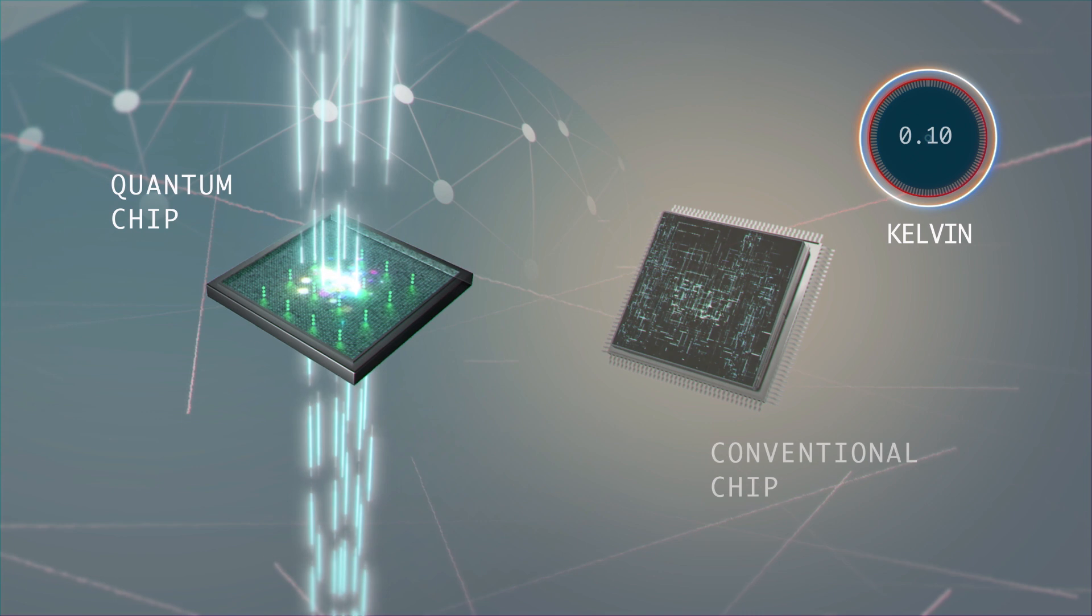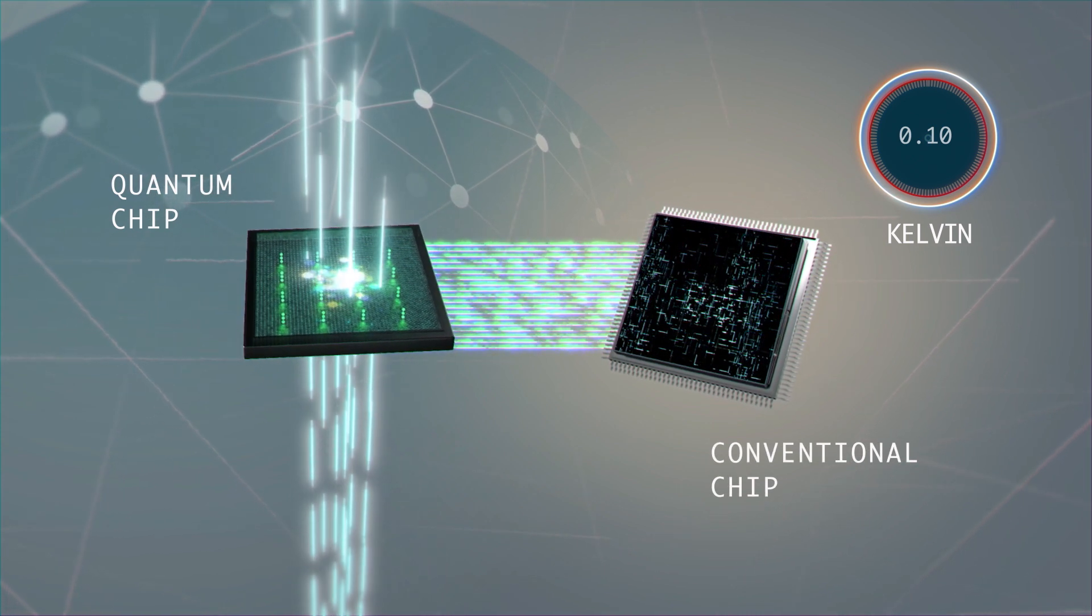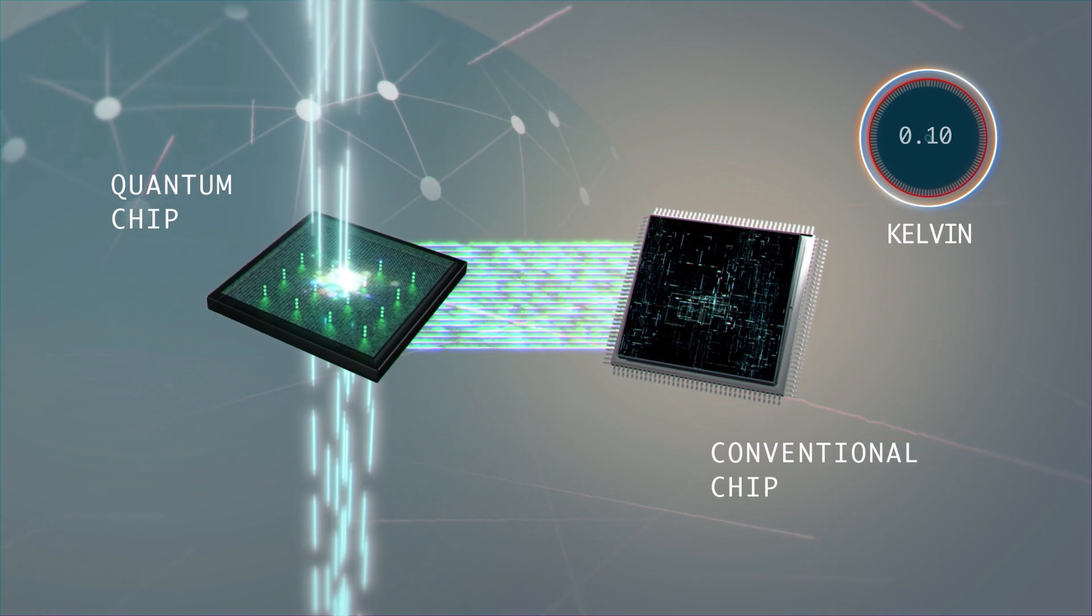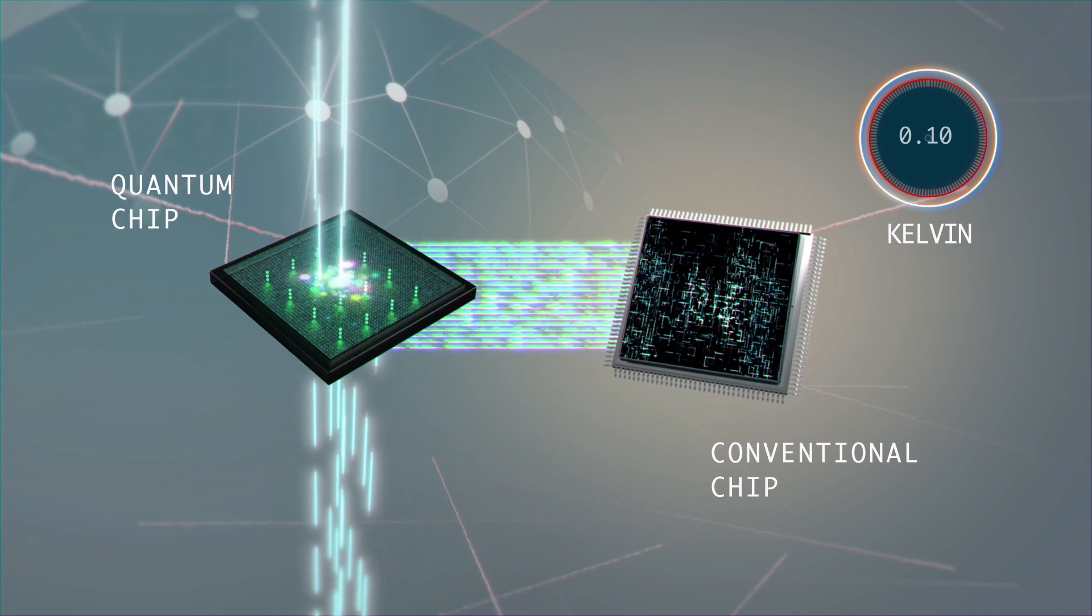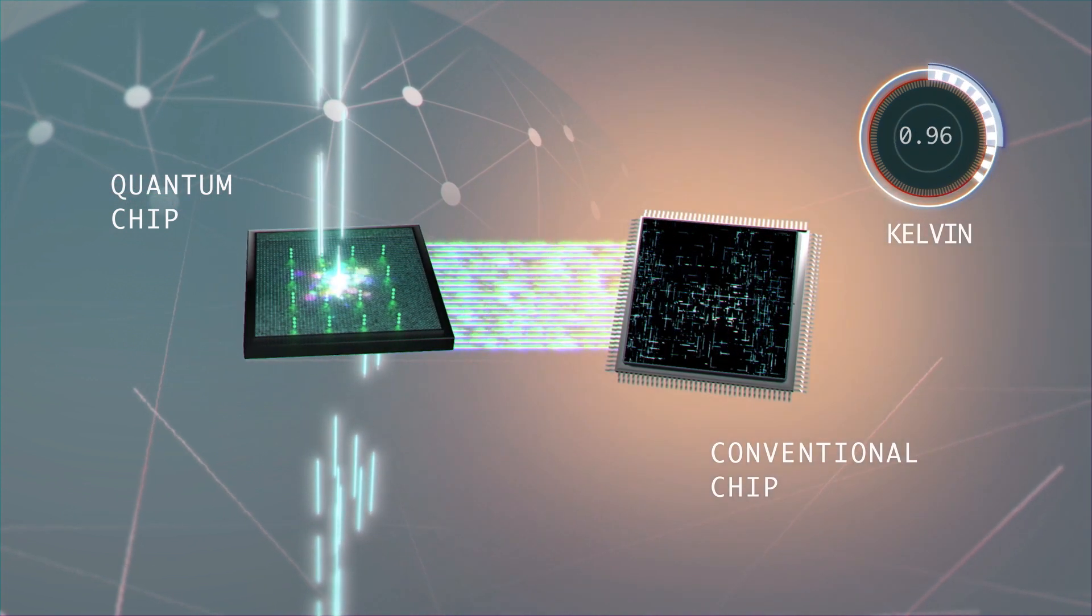It means we can now operate conventional silicon chips in tandem with the quantum chip. We need these conventional chips sitting next to quantum chips at low temperature to control the read and write operations that constitute the quantum calculations.